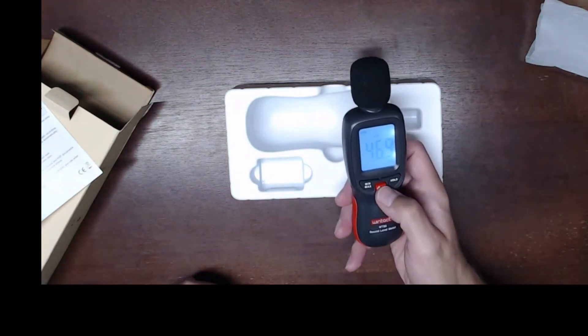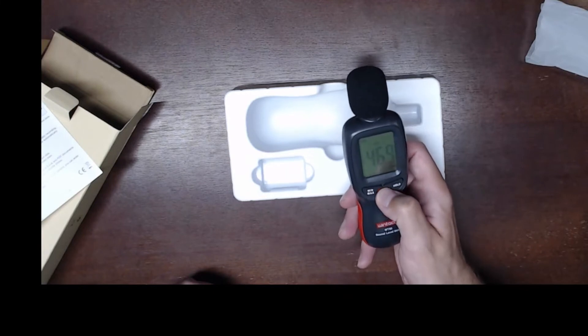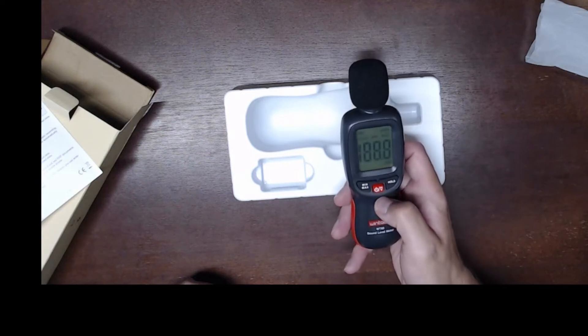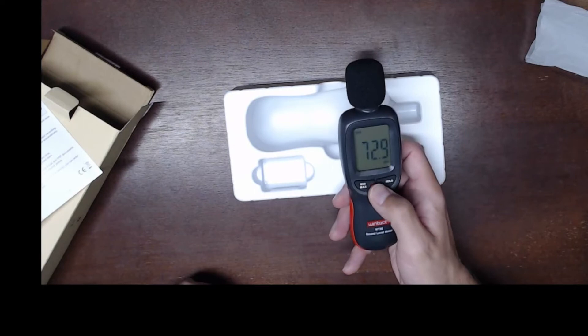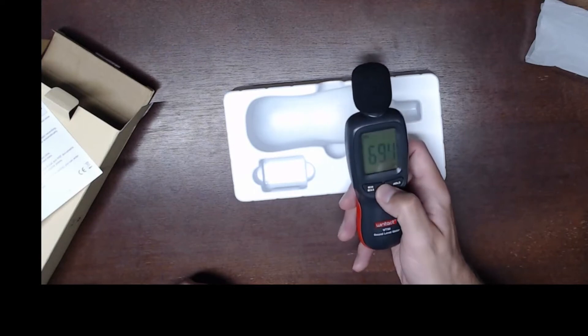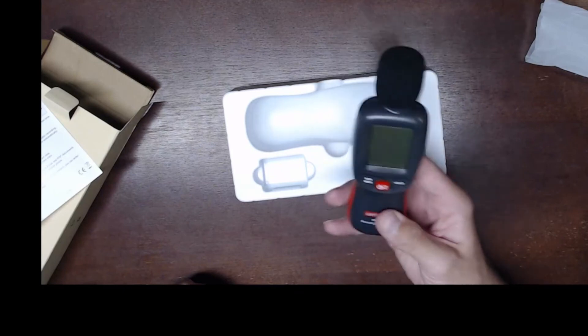Looks like you tap it one more time you get a backlight which is nice. Hold it down for a few seconds to turn it off. Just one press to turn it on. Another press turns on the backlight and then it just toggles. Hold it down for about three seconds to turn the system back off.